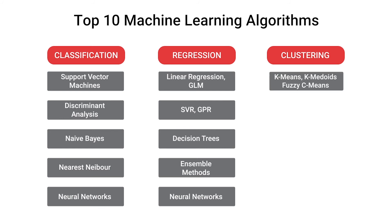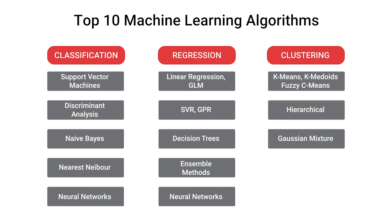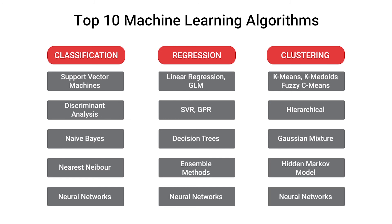In unsupervised learning, you have the k-means algorithm, you have the k-median algorithm, you have the fuzzy means algorithm, you have hierarchical models, hidden Markov models, and again neural network models.